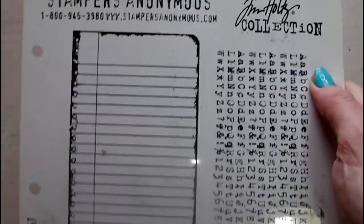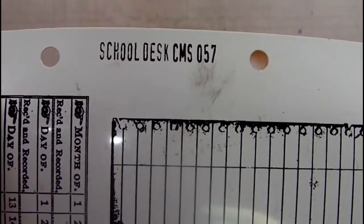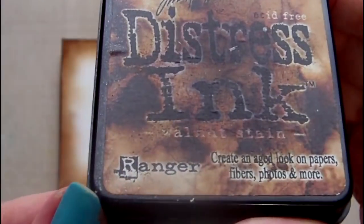Next, I'm going to add some stamping to my postcard. For this, I've chosen a Tim Holtz set called School Desk, and I'm stamping this using Distress Ink in Walnut Stain.